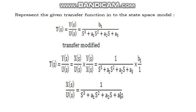For this analysis, I will take a simple transfer function T(s) = Y(s)/U(s) = b1 / (s³ + a1·s² + a2·s + a3). This transfer function can be modified by introducing an intermediate variable X(s), so that Y(s)/U(s) = [X(s)/U(s)] · [Y(s)/X(s)], which equals [1/(s³ + a1·s² + a2·s + a3)] · b1.